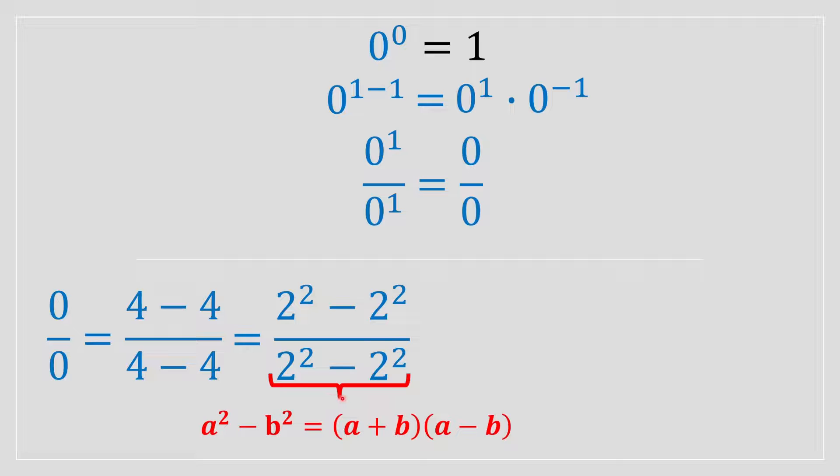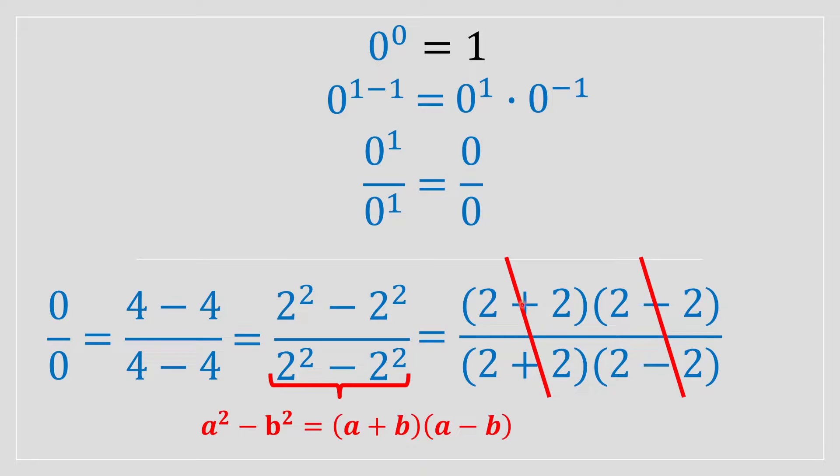And I can rewrite this expression above, this one right here, as the following, using the difference of squares formula. And notice 2 plus 2, this basically cancels that, and this basically cancels that. So you're just going to be left with equal to 1.